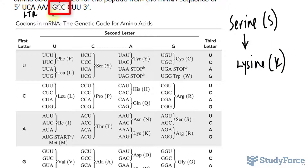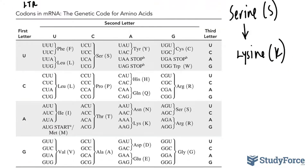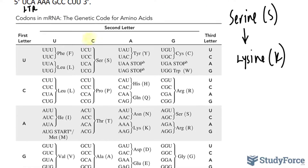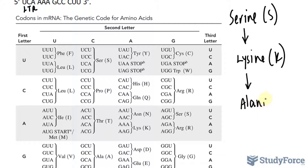Next is GCC. G is on the left, so we start right there, then C along the top, and looking within that section it happens to be alanine — A-L-A-N-I-N-E — which has the abbreviation A.